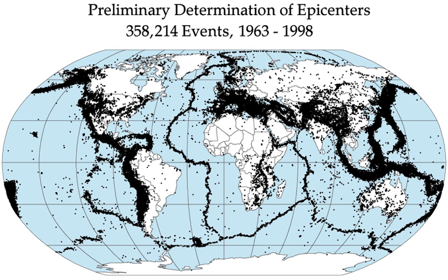Tectonic earthquakes occur anywhere in the earth where there is sufficient stored elastic strain energy to drive fracture propagation along a fault plane. The sides of a fault move past each other smoothly and aseismically only if there are no irregularities or asperities along the fault surface that increase the frictional resistance. Most fault surfaces do have such asperities, and this leads to a form of stick-slip behavior. Once the fault has locked, continued relative motion between the plates leads to increasing stress and therefore stored strain energy in the volume around the fault surface.